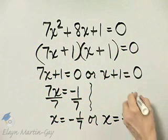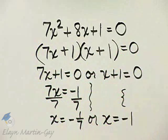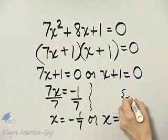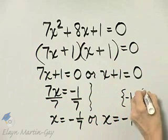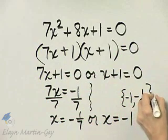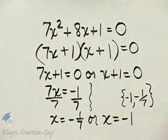And we have two solutions then. Here's my solution set notation. Negative 1 is a solution and negative 1 seventh is a solution.